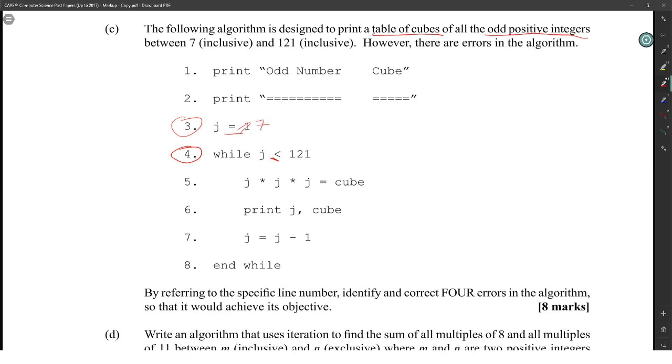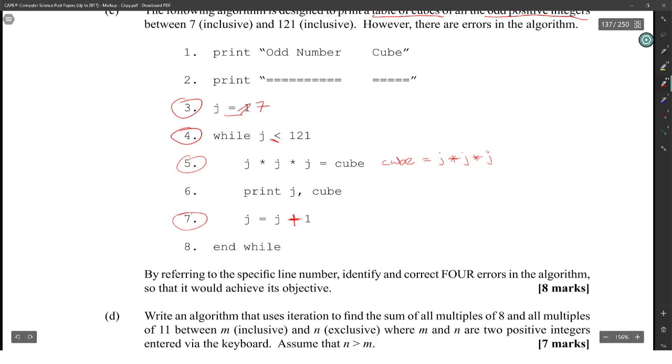So we start at 7. The first value would be 7. Then we print out cube and then we print J cube. So it would be 7 and then the cube of 7. That's correct. Then J is equal to J minus 1. It's supposed to be J is equal to J plus 2, because we're going through odd numbers. And this here is not supposed to be J by J by J is equal to cube. It's supposed to be cube is equal to J by J by J. Those are the four errors there. Finding them and fixing them, each one would be two marks.